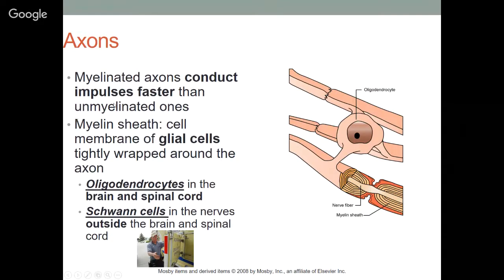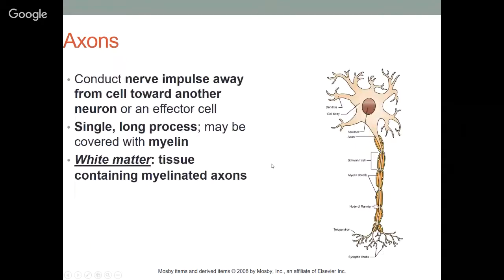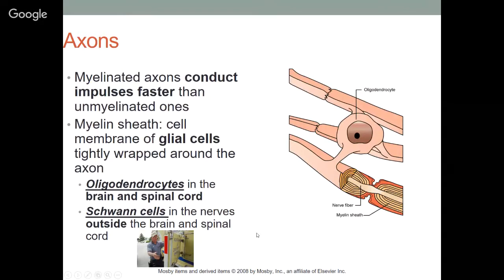Myelinated axons conduct impulses faster than unmyelinated ones because of this coating, which helps the nerve impulse conduct much faster. The myelin sheath is a cell membrane of glial cells tightly wrapped around the axon. Within the brain and spinal cord — the central nervous system — these glial cells are called oligodendrocytes. Outside the CNS, they're called Schwann cells.